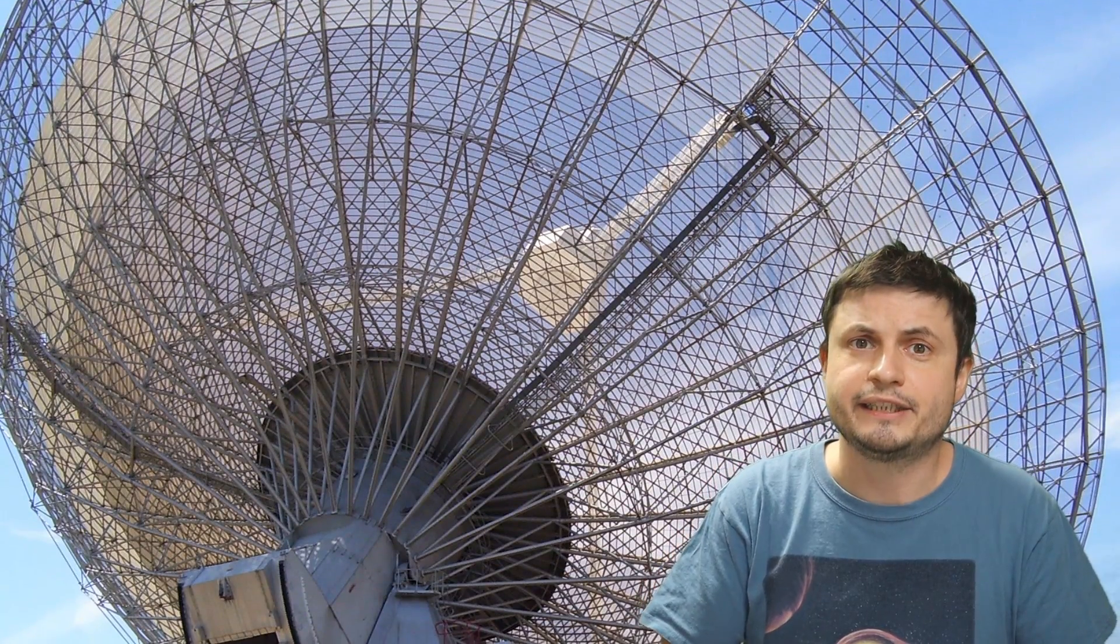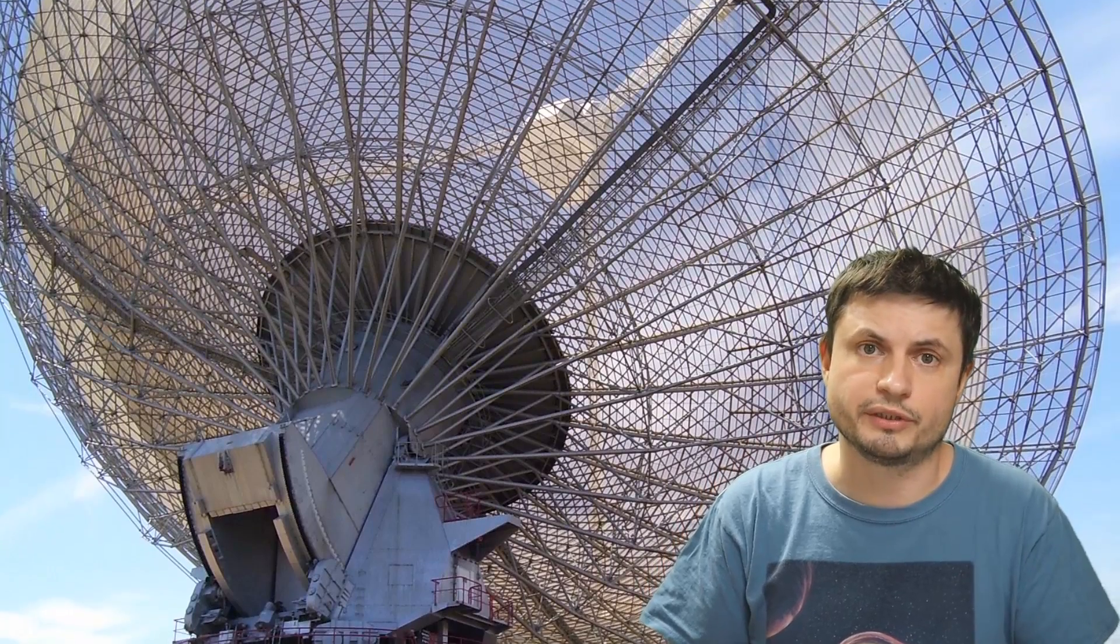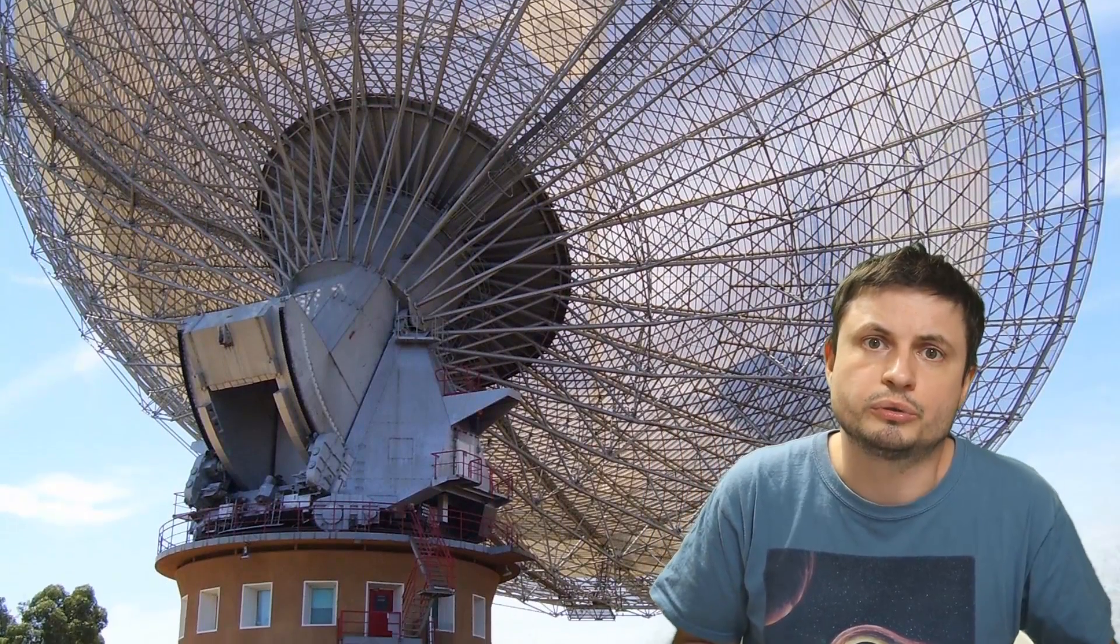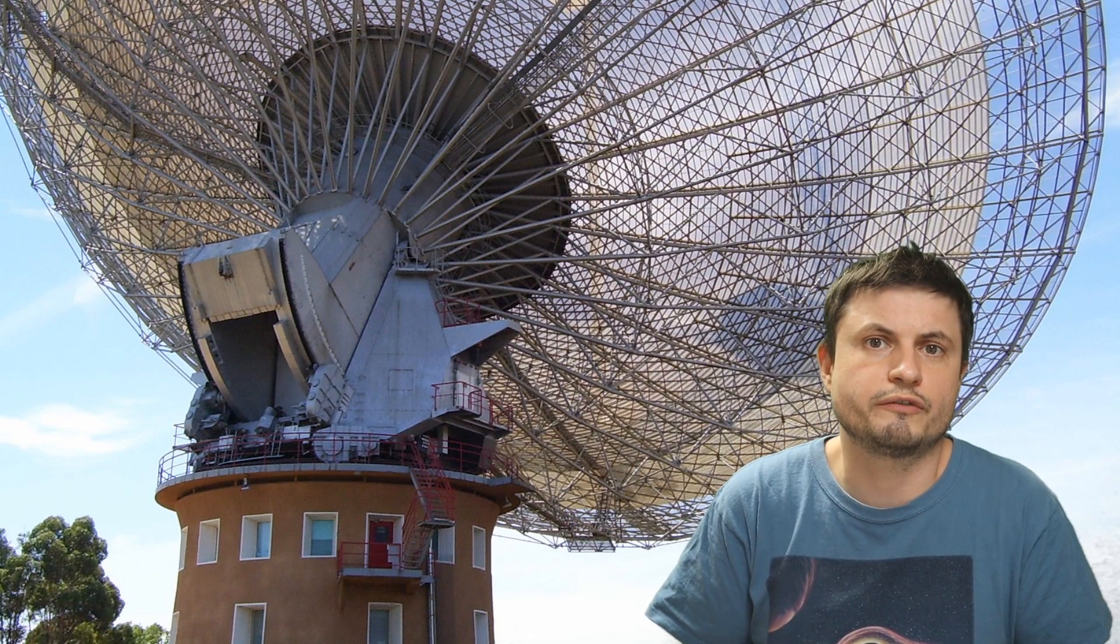This actually starts right here at the Parkes Observatory in Australia, a very large radio telescope that's known for a lot of different discoveries. Since 1998, unusual radio observations were coming only out of this observatory and a lot of them in some sense resembled what we would today call FRBs.